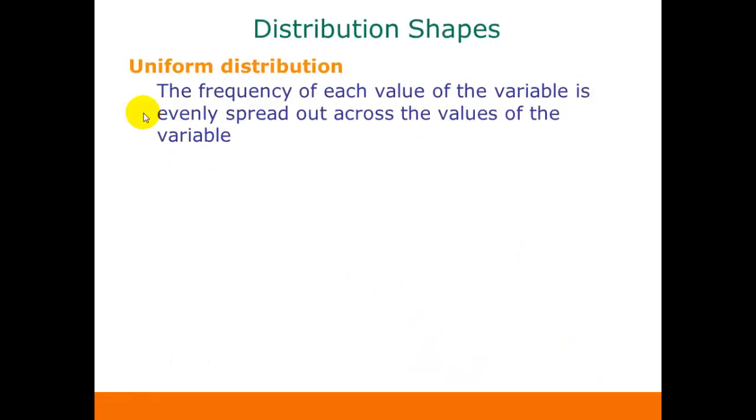In different distribution shapes, the first one is a uniform distribution, and in this one the frequency of each value of the variable is evenly spread out across the values of the variable. In other words, the frequency for each different value is the same.